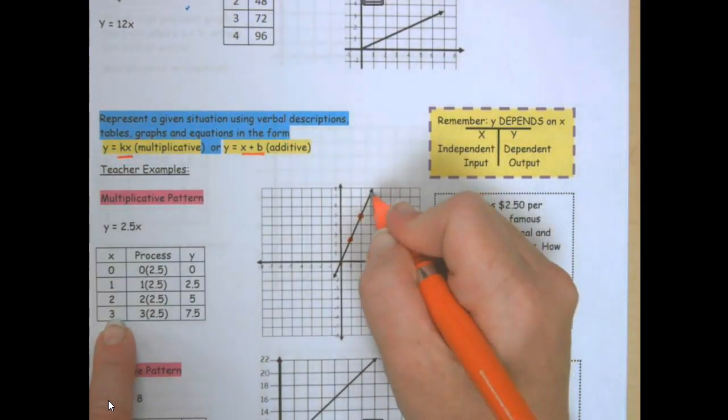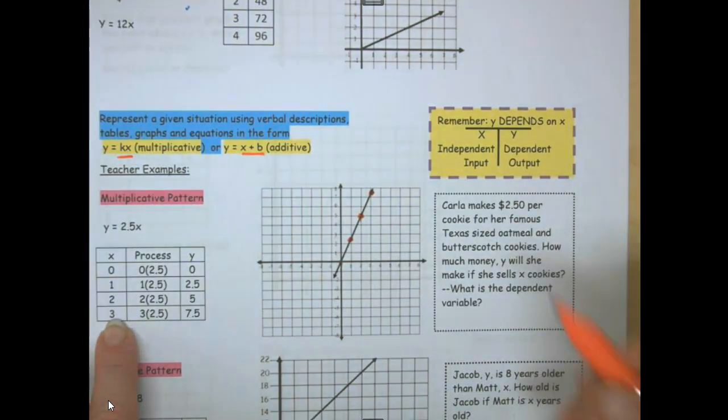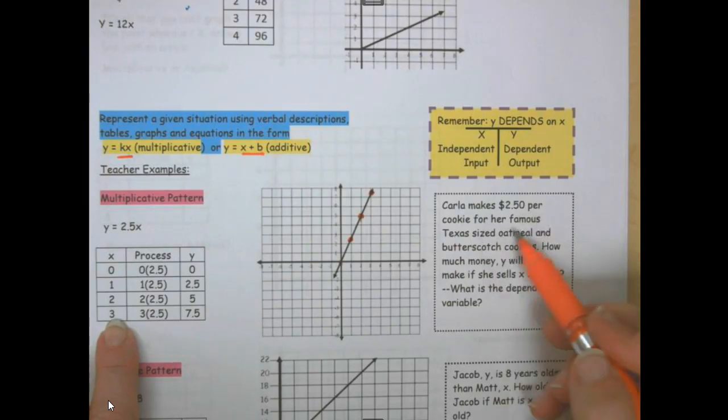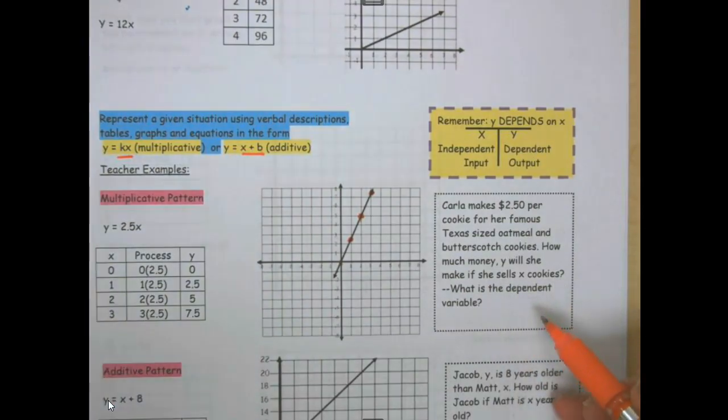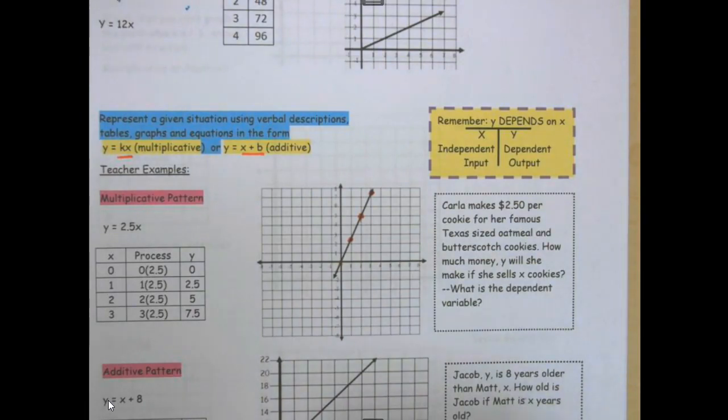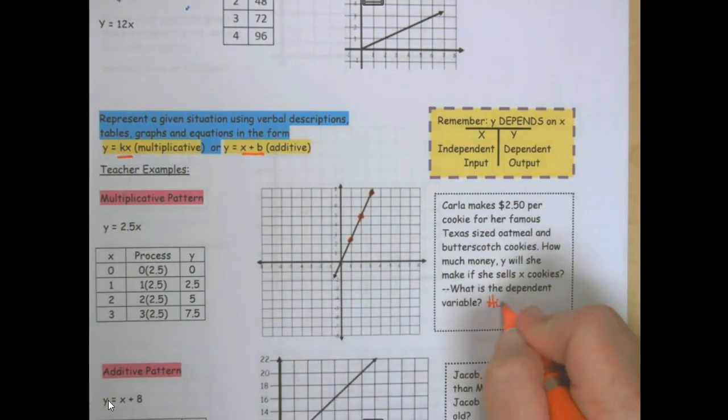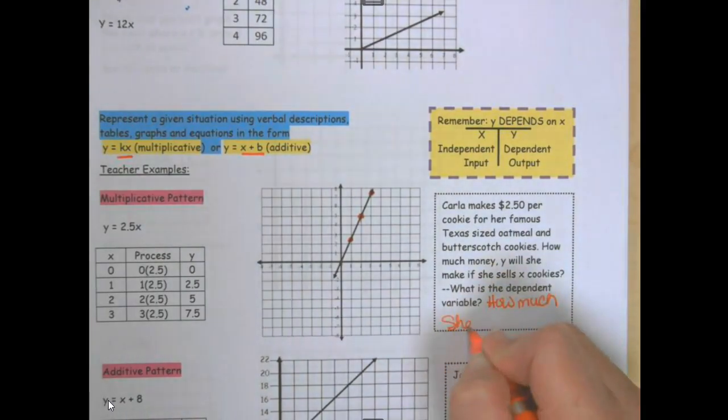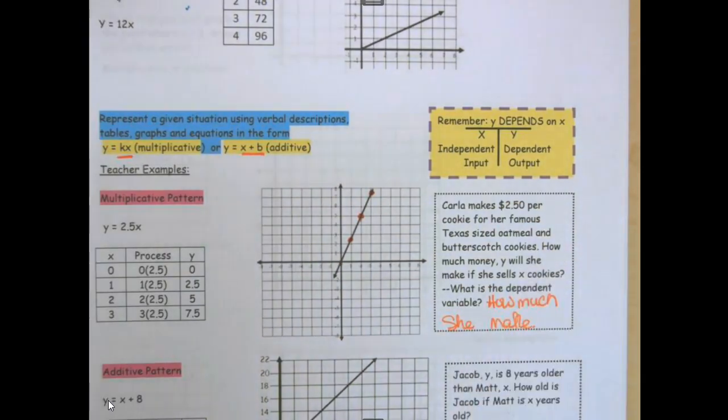Carla makes $2.50 per cookie for her famous Texas size oatmeal butterscotch cookie. How much money will she make if she sells x cookies? What is the dependent variable? The dependent depends on how many cookies she makes. How much she makes depends on how many cookies she makes. So how much she makes. Jacob is y years older than Matt x. How old is Jacob if Matt is x? What is the independent variable? Matt's age.